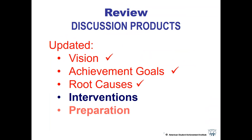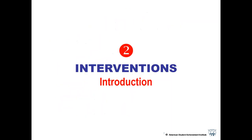As you know, we have products that come out of all of our discussions with you. Right now we have three products in your school improvement plan based on the input that you gave to your steering team: we have a vision statement, we have your achievement goals identified, and we have your root causes identified. Today we're looking at interventions — the action part of this. What are we going to do about it?